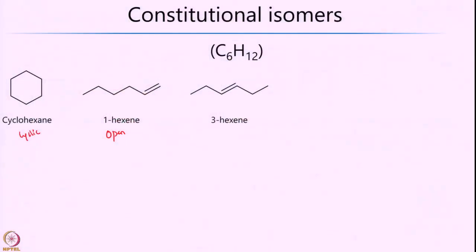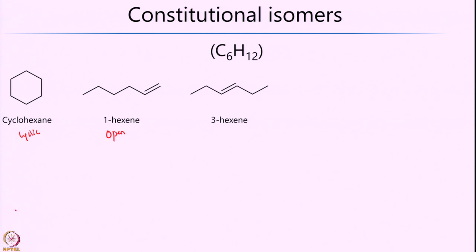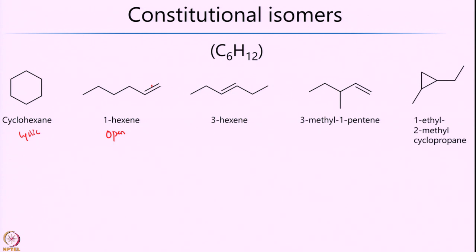You can also draw other isomers of C6H12, such as 3-hexene — simply moving the double bond from the first carbon to the middle carbon. You can also come up with 3-methyl-1-pentene, which again has the same empirical formula C6H12. And finally, even more innovative structures like 1-ethyl-2-methylcyclopropane on the right-hand side — all having the same molecular formula but completely different connectivity.